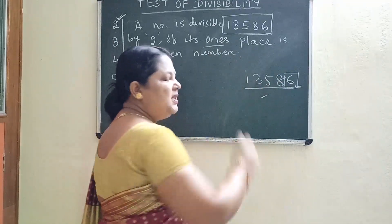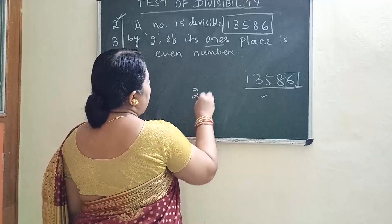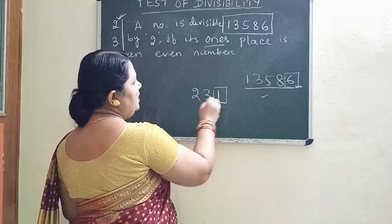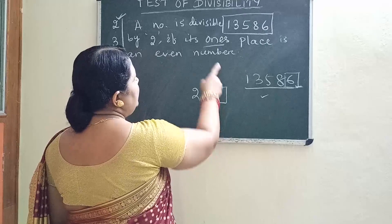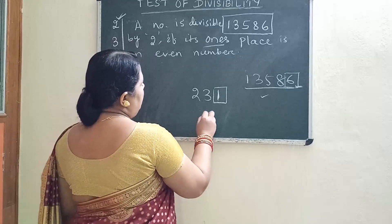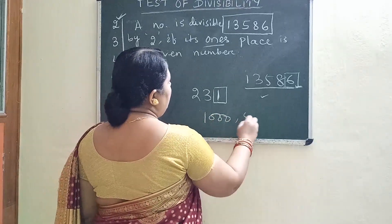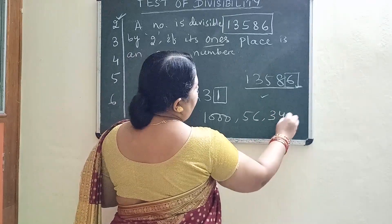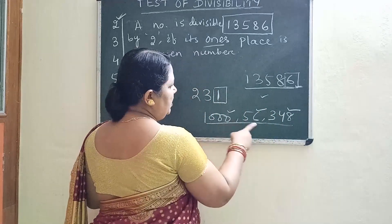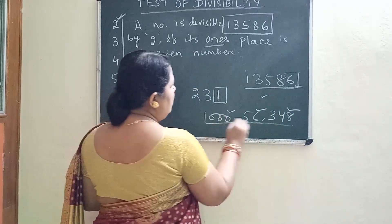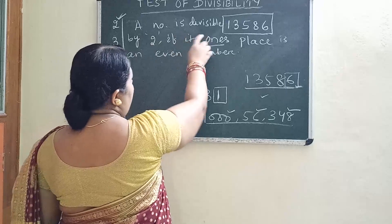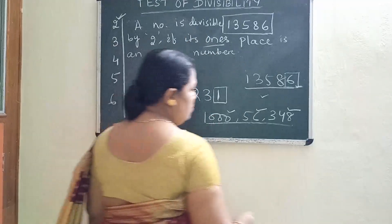If I take two hundred thirty-one, the one's place is one, which is an odd number, so two hundred thirty-one is not divisible by two. Other examples: one thousand fifty-six, three hundred fifty-six, three hundred forty-eight — check the one's place in all of these and we get an even number, so all these numbers are completely divisible by two. This is the formula to check whether a number is divisible by two or not.